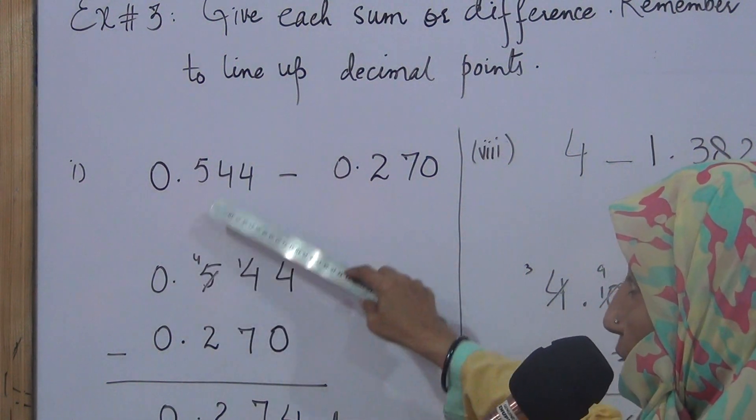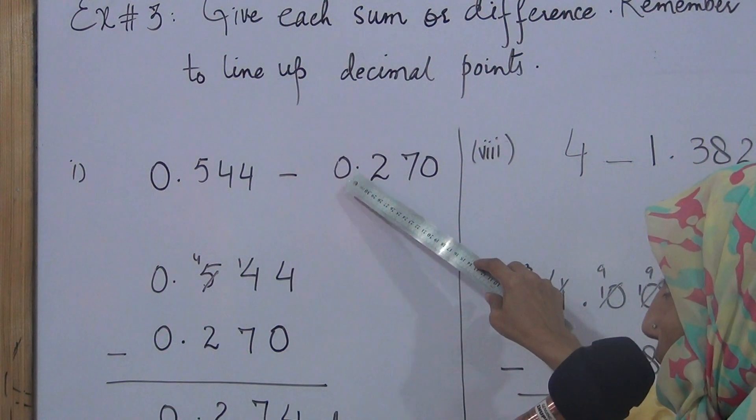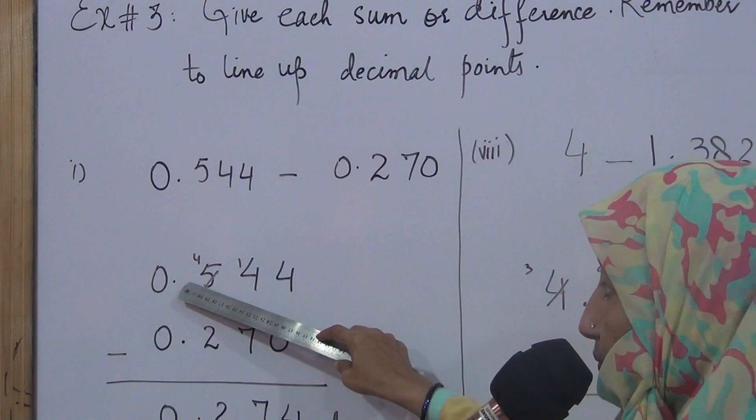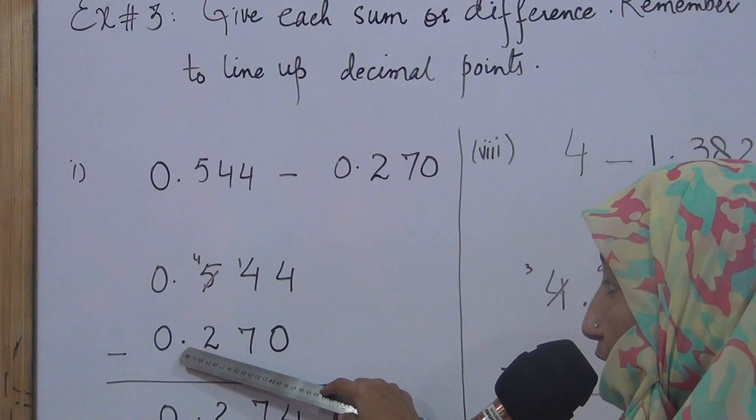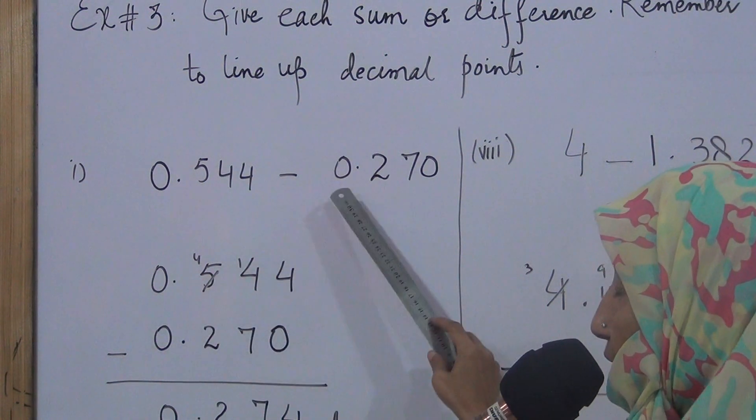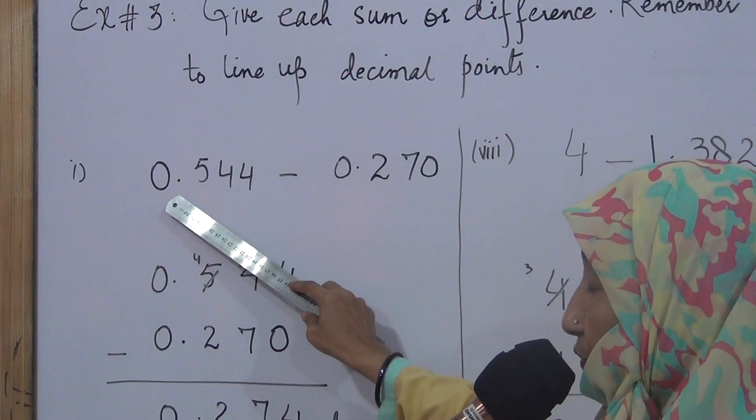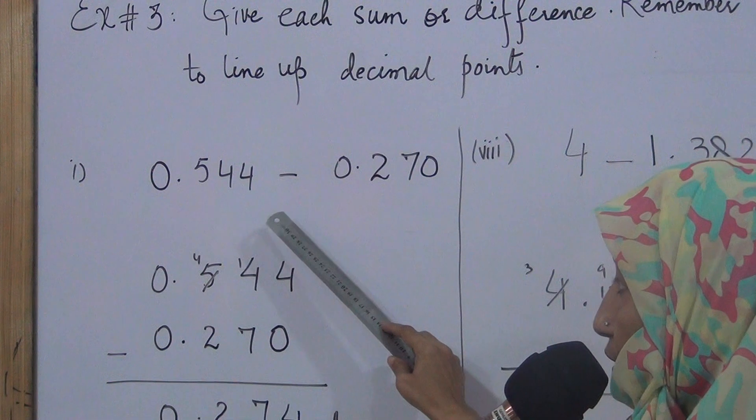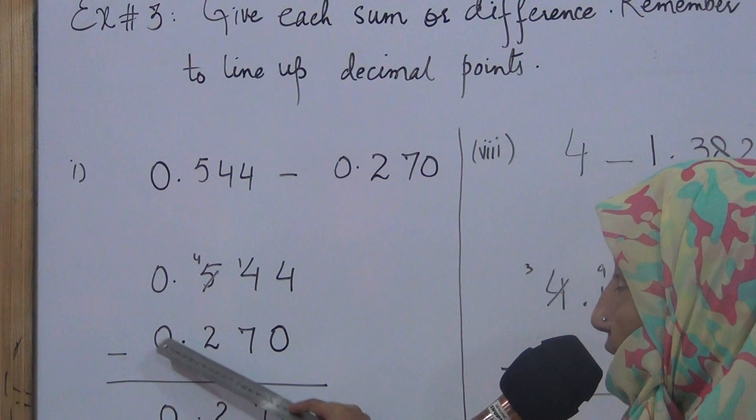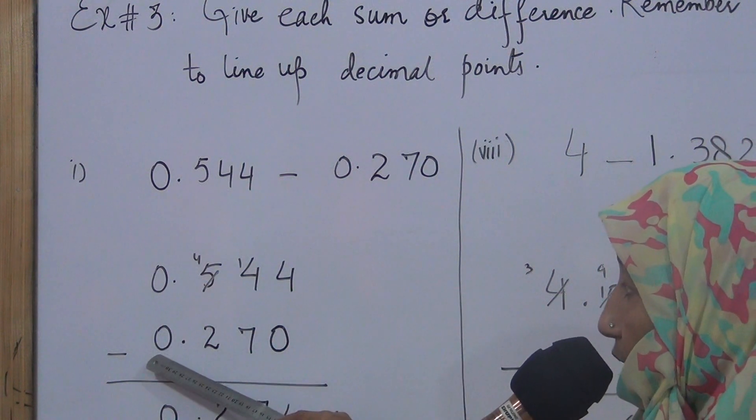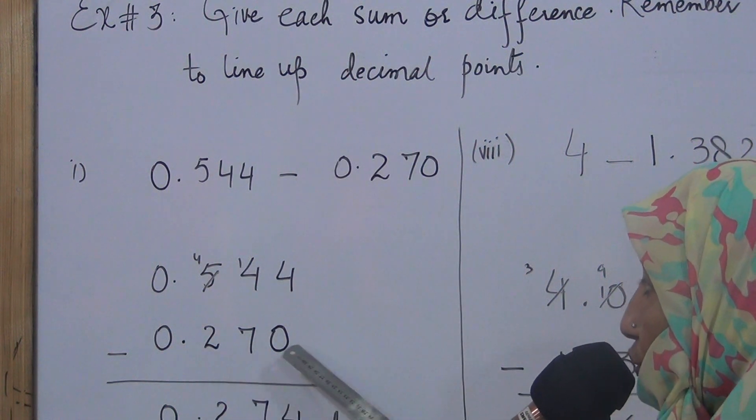First number is 0.544. Then we have to write the second number in a way that the decimal point will come just after the decimal point. Point below point. There is one digit before decimal point in the first number. Second number also has one digit. Point below point. Before point there was zero. Zero below zero. After that is 2-7-0.